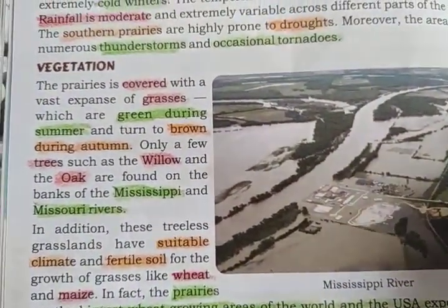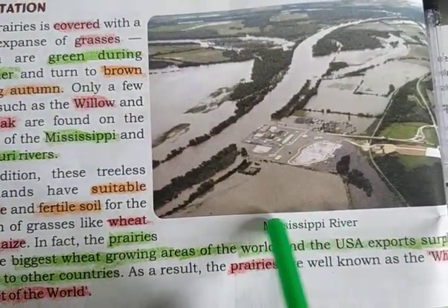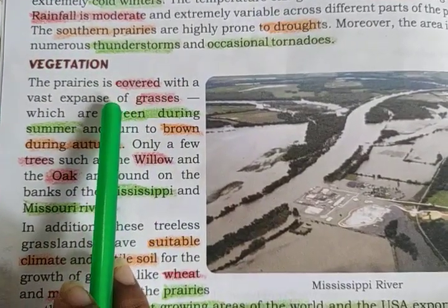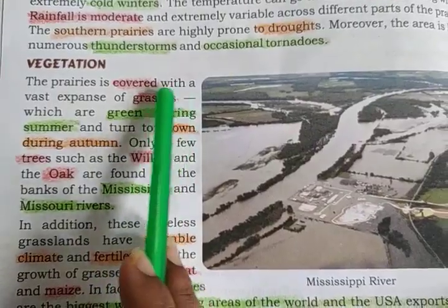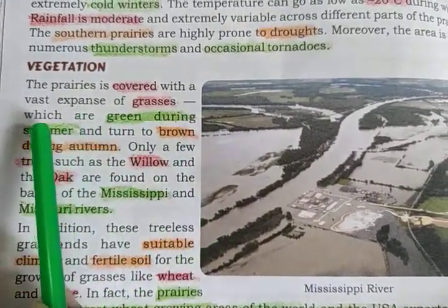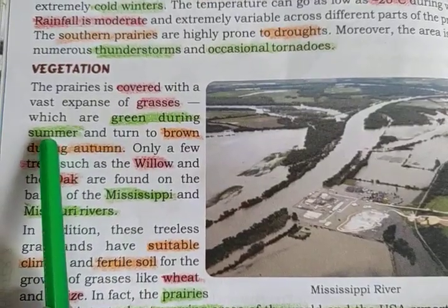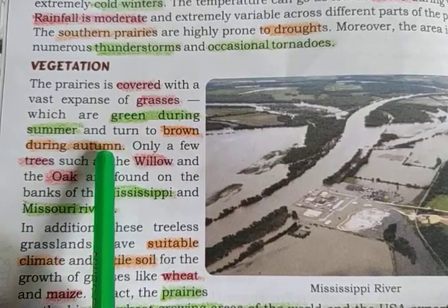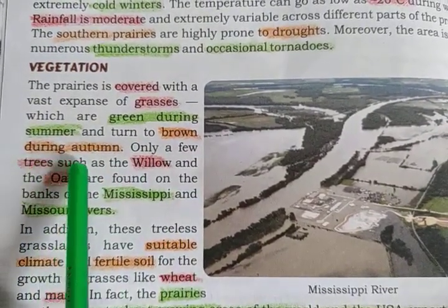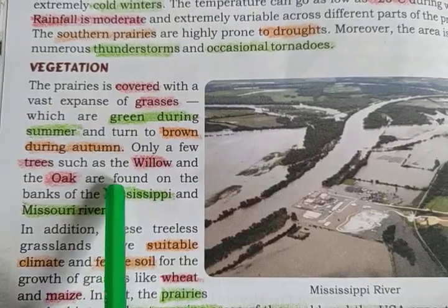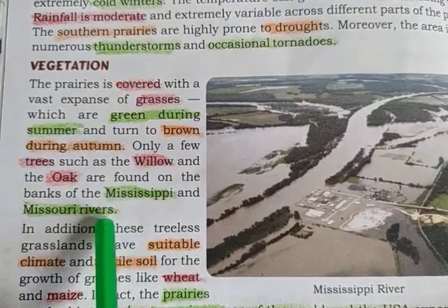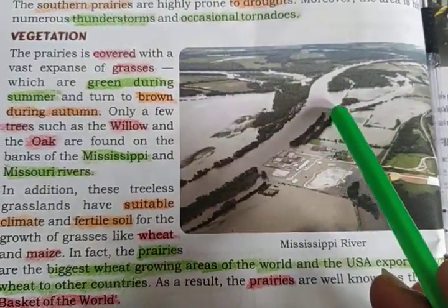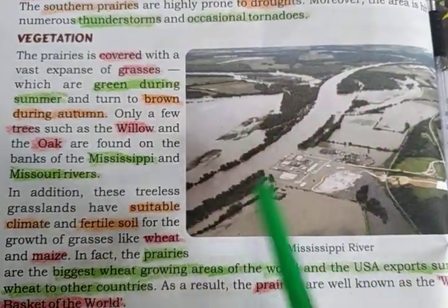Now let's talk about the vegetation. Here is a picture of the Mississippi River. The prairie is covered with expanses of grass, which are green during summer and brown during autumn. Only a few trees such as willow and oak are found near the banks of the Mississippi and Missouri rivers. The rest of the area is covered with grass.